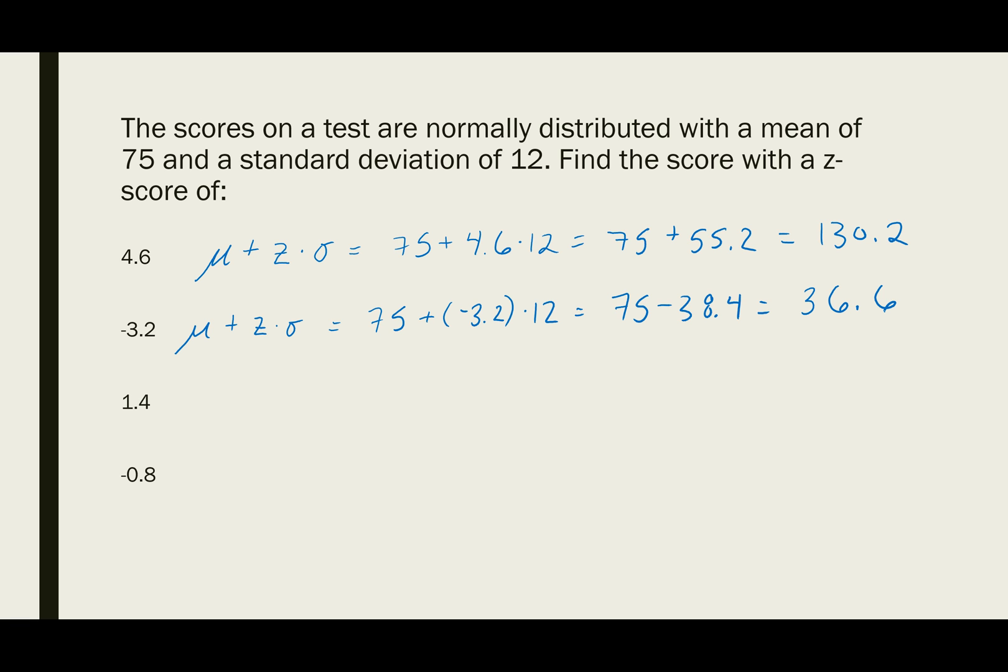The next one is a z-score of 1.4. It's the mean plus the z-score times the standard deviation, which is 75 plus 1.4 times 12. 1.4 times 12 is 16.8, and 75 plus 16.8 equals 91.8. The test score that is 1.4 standard deviations above the mean is 91.8.